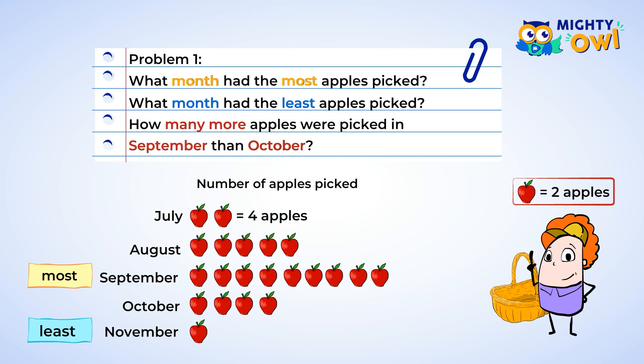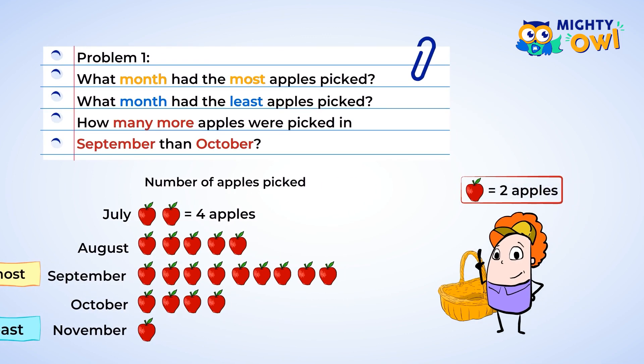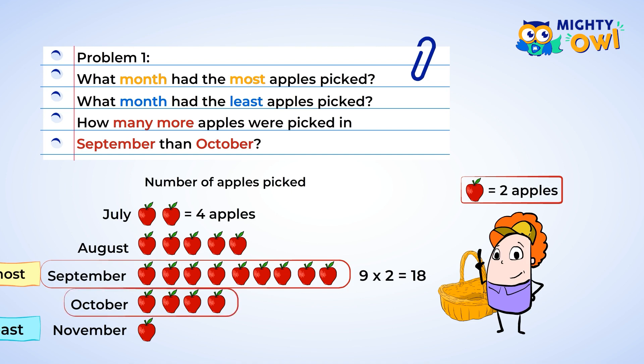Next question: how many more apples were picked in September than in October? First, let's find out how many apples were picked in each of those months. September has 9 pictures of an apple. Remember, each picture of an apple represents 2 picked apples, so 9 multiplied by 2 is 18. Next, October has 4 pictures of apples, each representing 2 actual apples. 4 multiplied by 2 is 8, so 8 apples were picked in October.